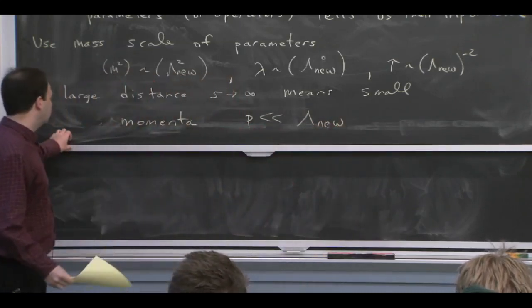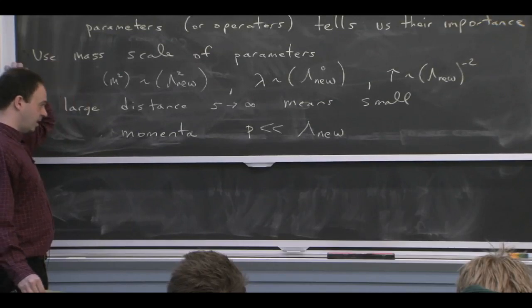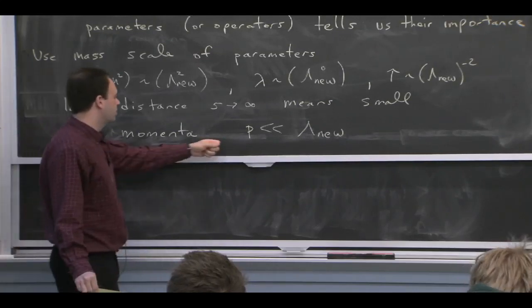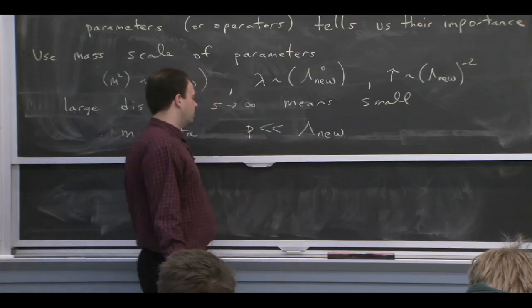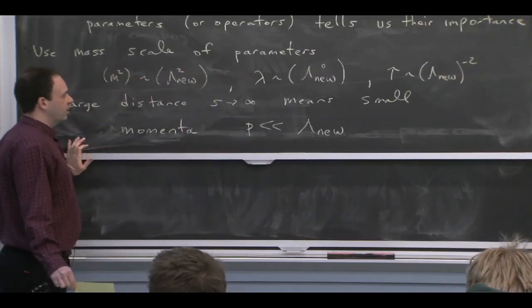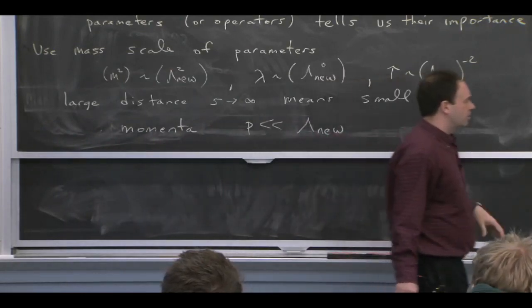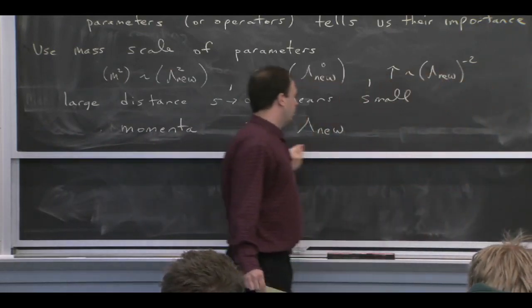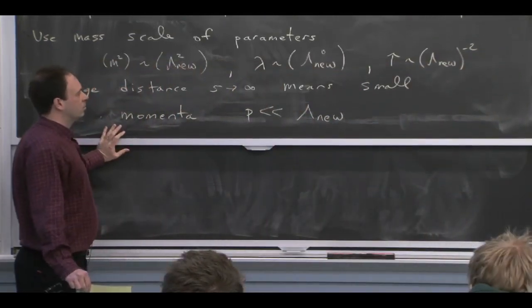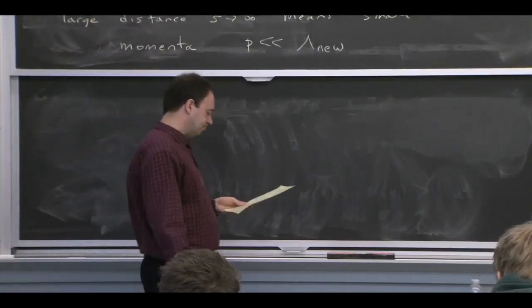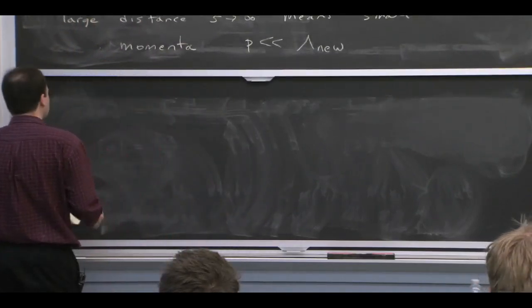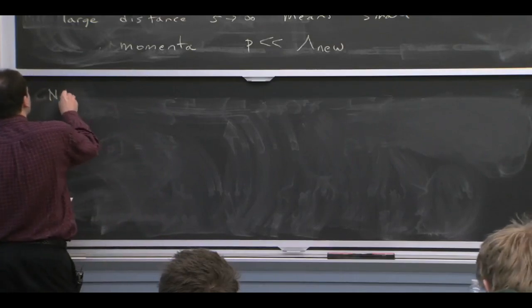So if you just associate a power to the parameters, if we're still in d equals 4, then we would get this association. This being the statement that it's relevant, marginal, and irrelevant. And we can do a power counting in this lambda nu. And we could then say, in a language which would be familiar from Feynman diagrams where we do everything in momentum space, that the momentum we want to study, p, has to be much less than this lambda nu. And we'll do the power counting in the lambda nu. And that will make the, for example, tau term an irrelevant, less important operator.